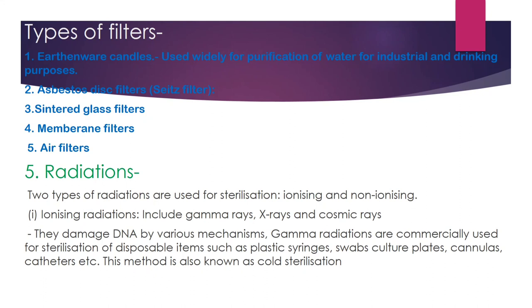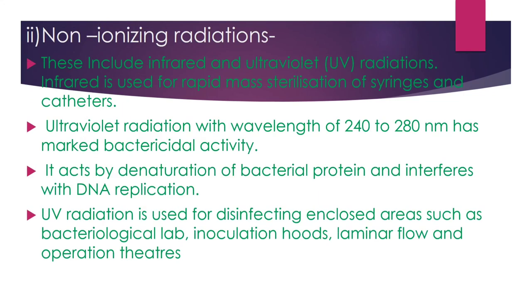Radiation sterilization has two types: ionizing and non-ionizing. Ionizing radiations include gamma rays, X-rays, and cosmic rays — they damage DNA by various mechanisms. Gamma radiation is commercially used for sterilization of disposable items such as plastic syringes, swabs, and cannulas. This method is known as cold sterilization. Non-ionizing radiations involve infrared and UV rays; infrared is used for rapid mass sterilization of syringes and catheters.